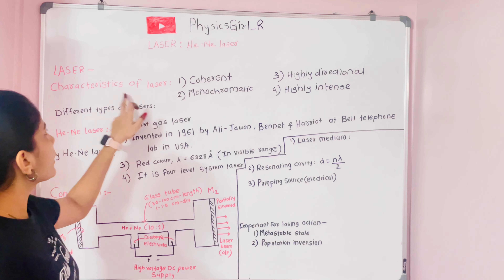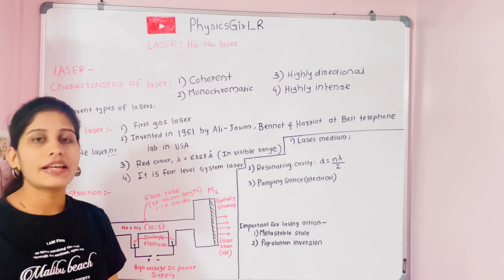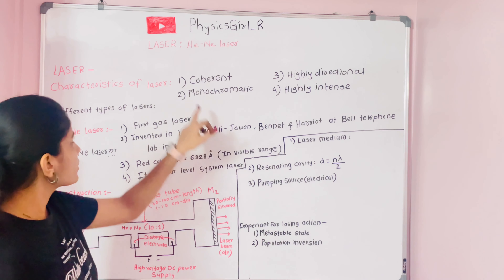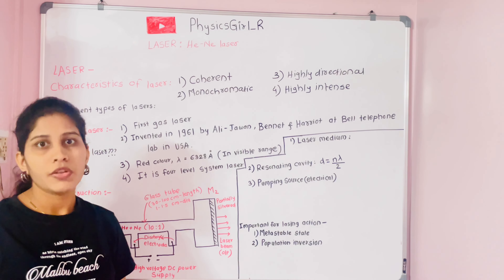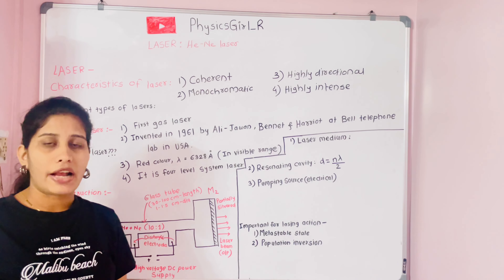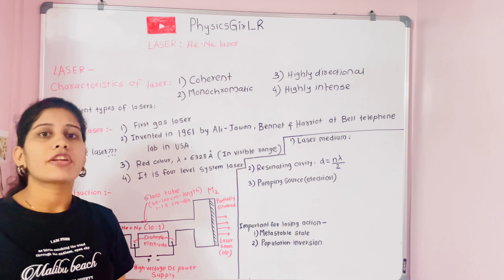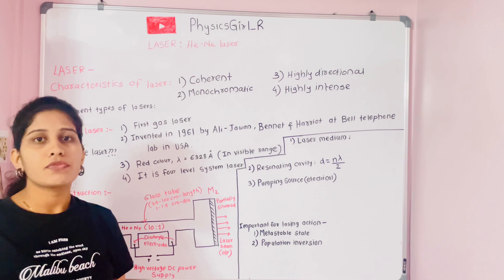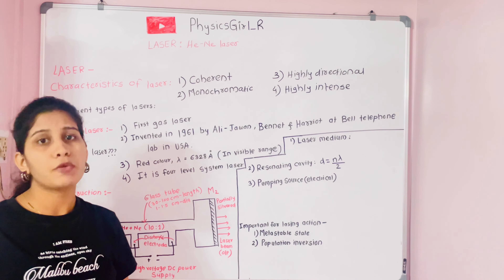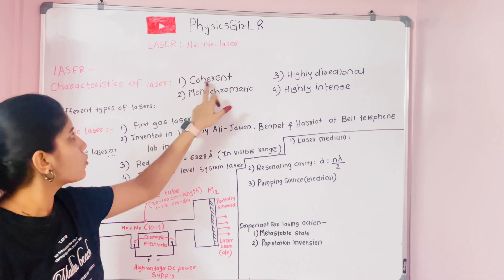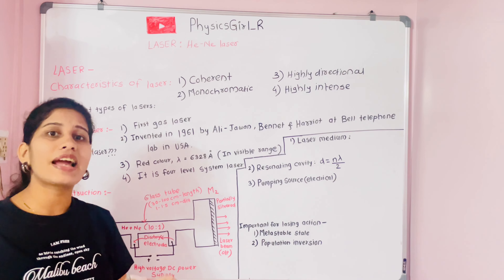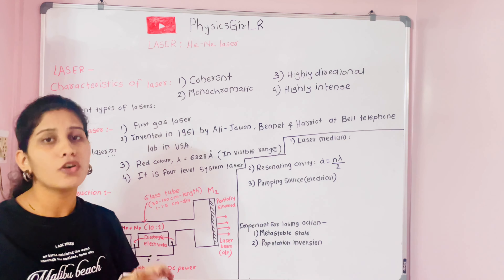There are different characteristics of laser light. The first characteristic is coherence. There are two types of coherence: spatial coherence and temporal coherence. Laser light exhibits both types, meaning laser light is highly coherent.